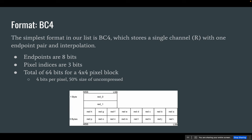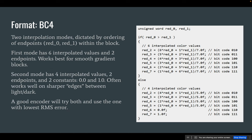Our first format is BC4, the simplest in the list. It stores a single channel — grayscale data is one way to think of it. It works in a scheme very similar to what the diagram indicated: we have two 8-bit endpoints A and B, followed by pixel indices of three bits per pixel, for a total of 64 bits for the 4×4 block. That's about a 50% compression ratio versus an 8-bit grayscale image. The encoder's job is to find these endpoint values such that the endpoints plus the fixed interpolations match pretty well with the actual colors in your block in the source image.